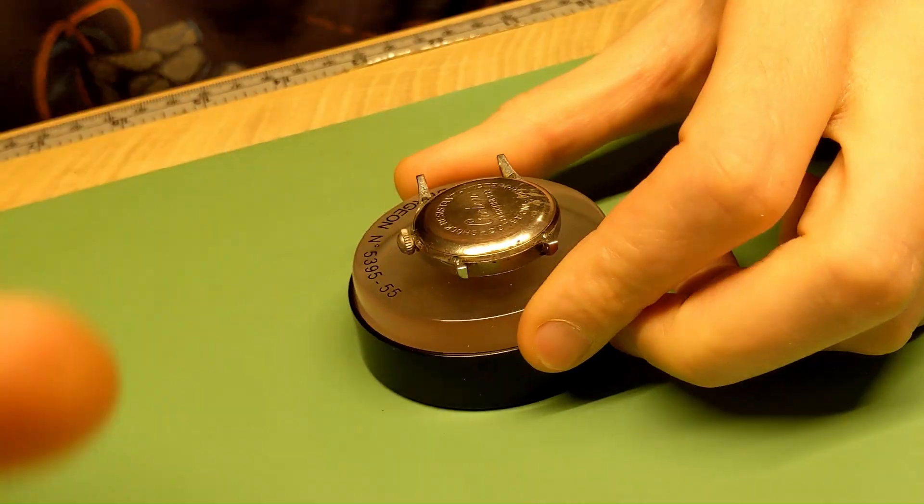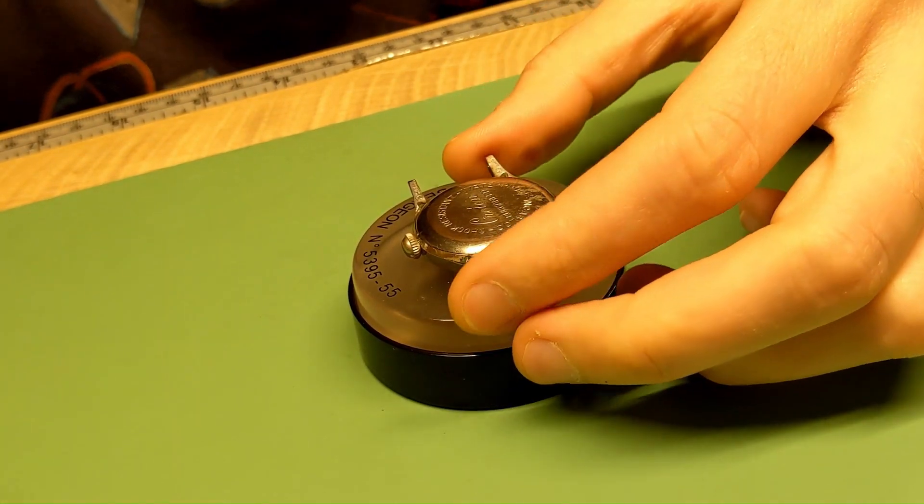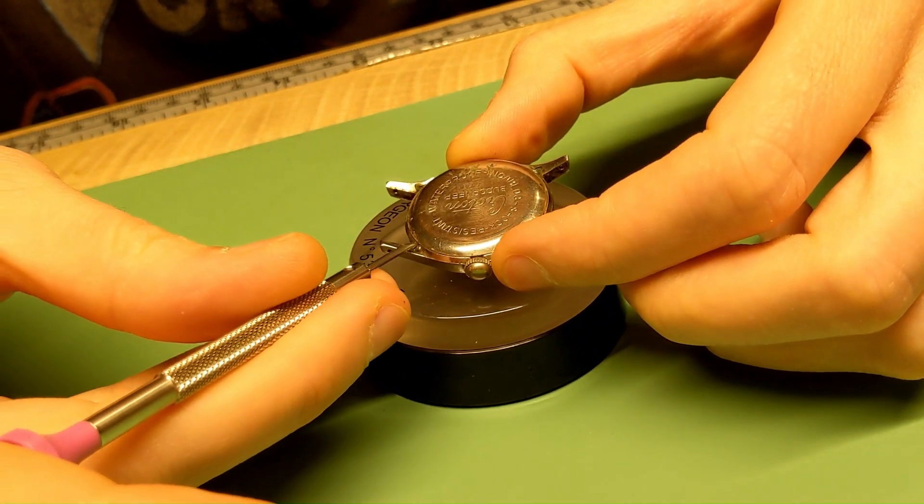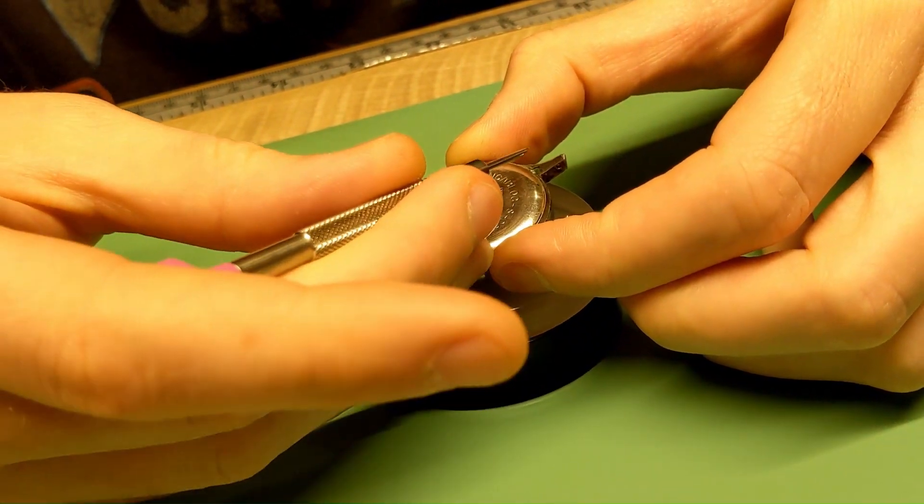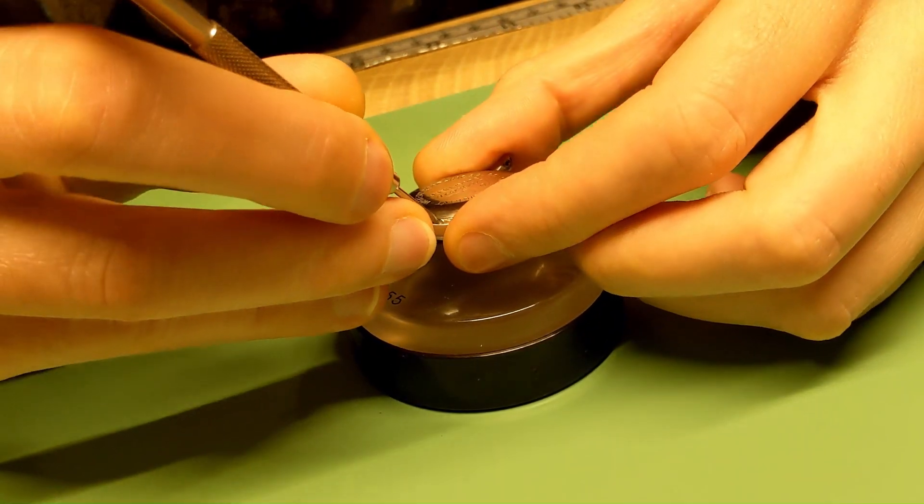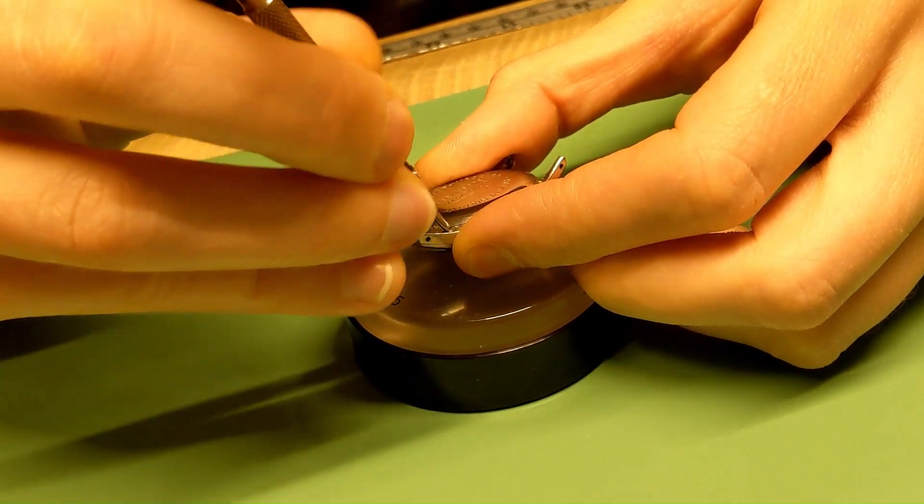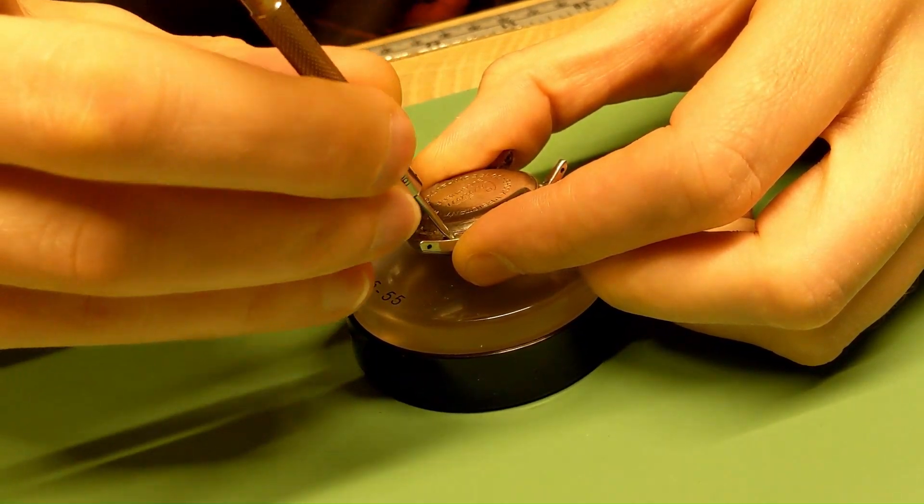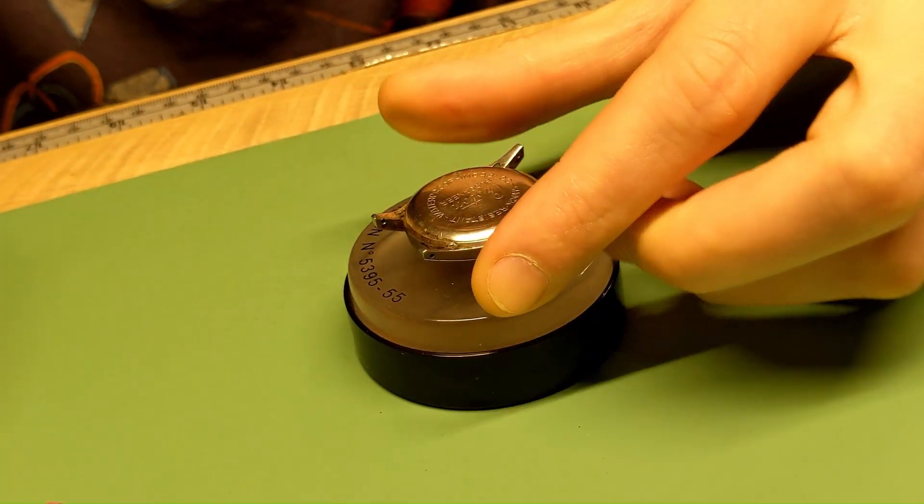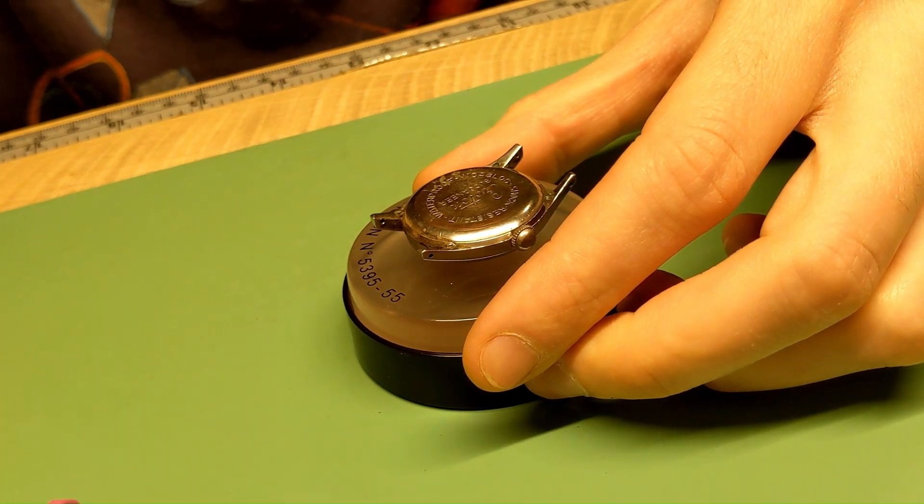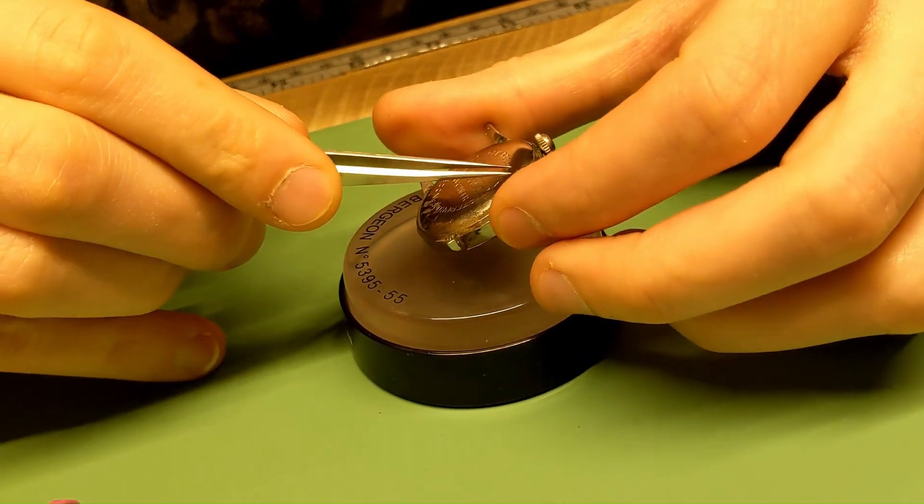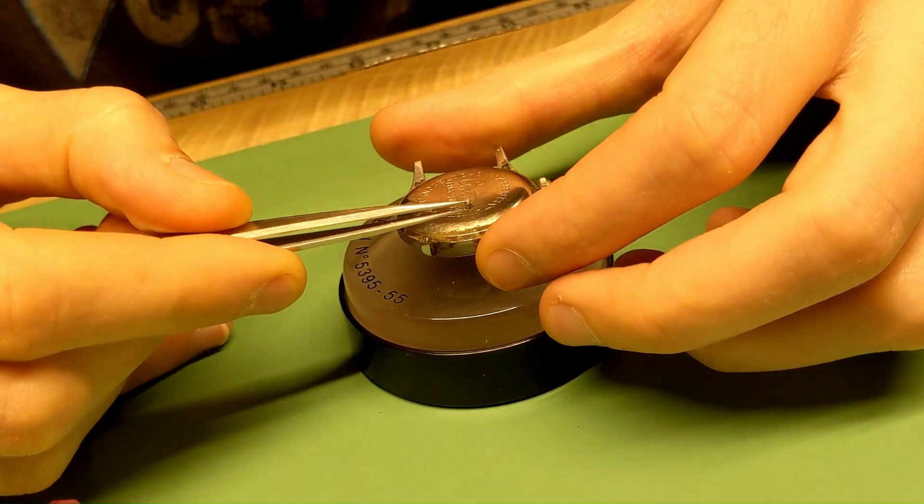Now with a clamshell case, you've got these little screws holding in the case back, so you've got to remove those. You want to use some decent downward force when you're unscrewing to prevent slippage. There's no point in scratching the case if you don't need to.